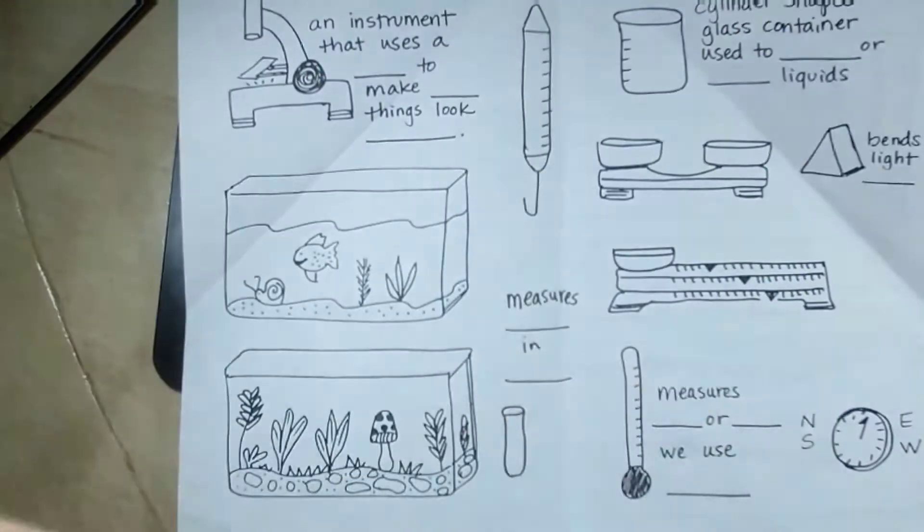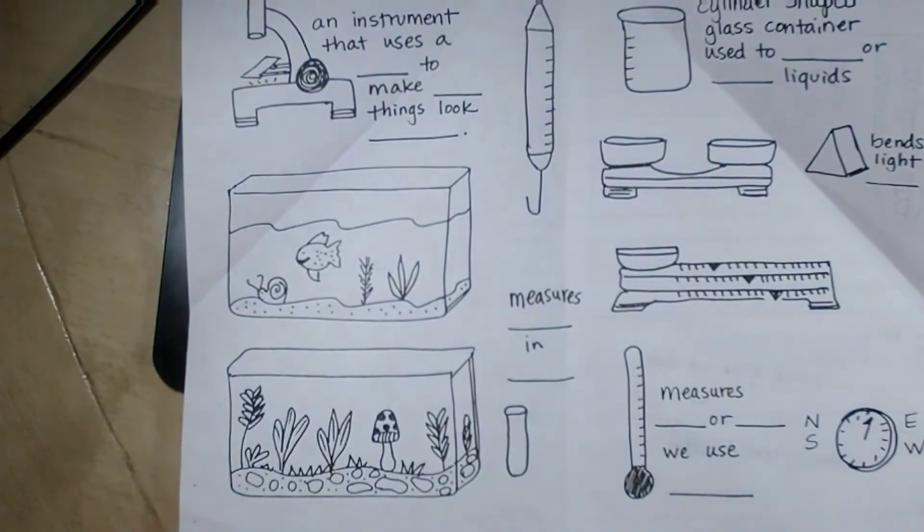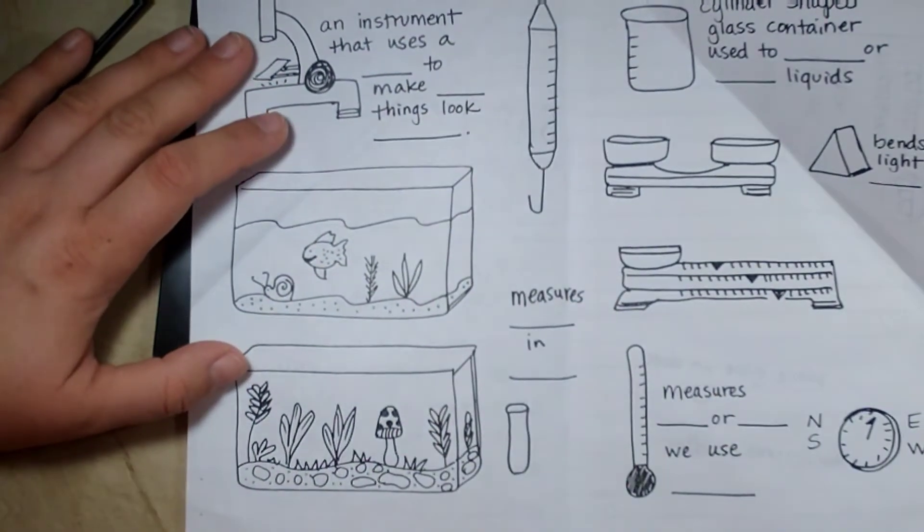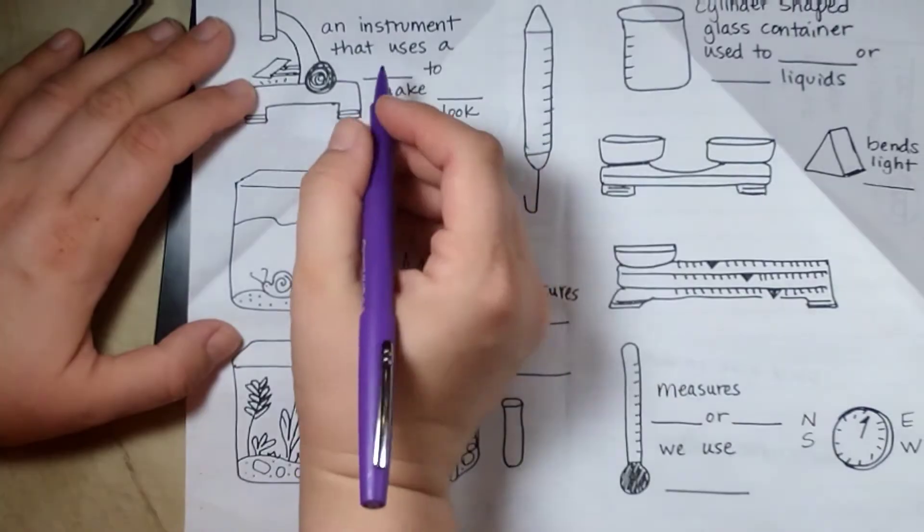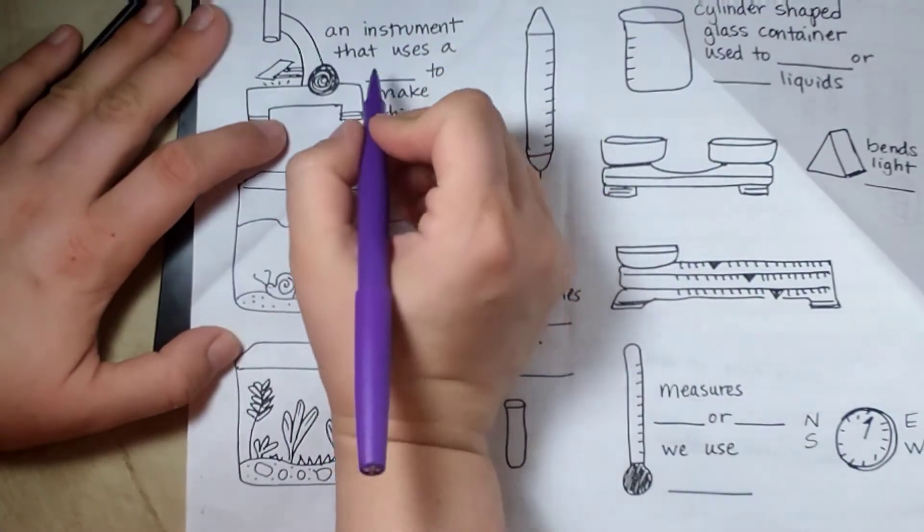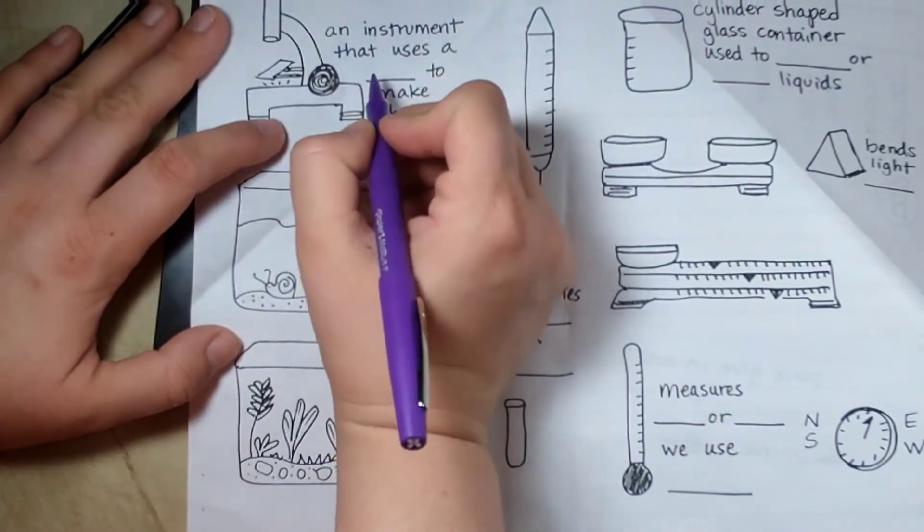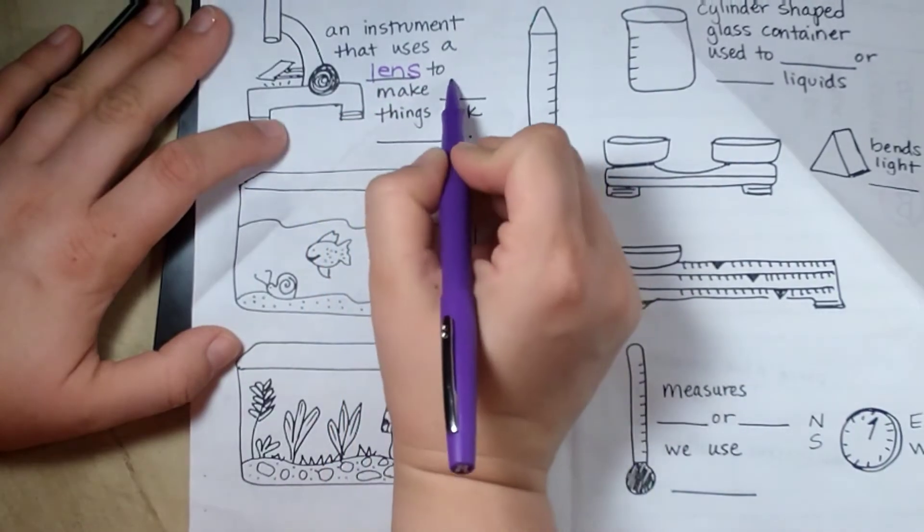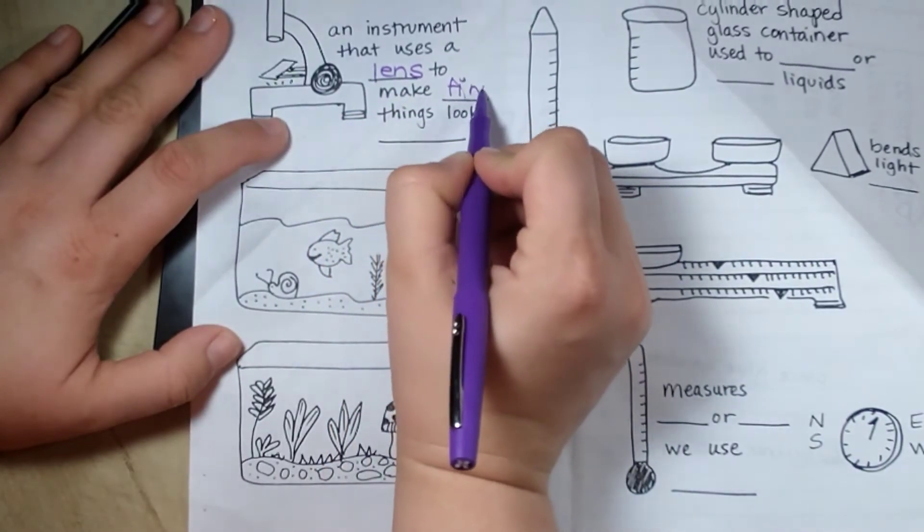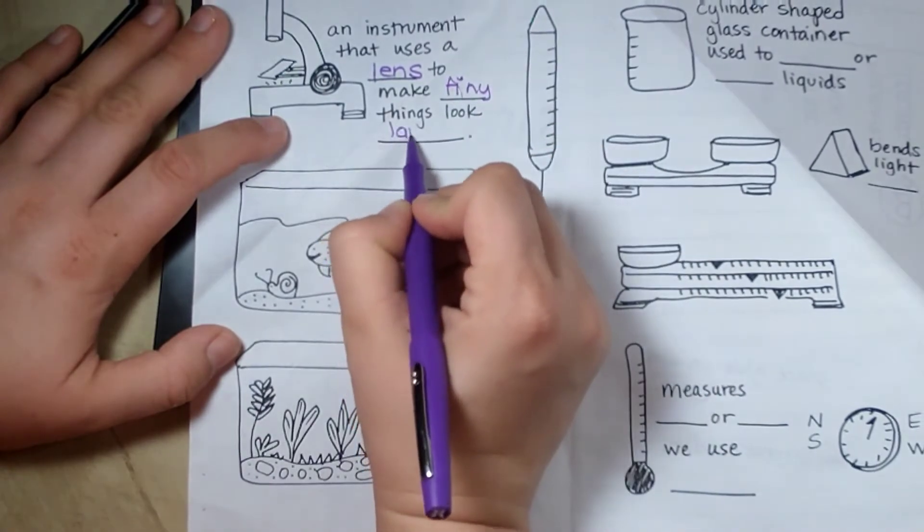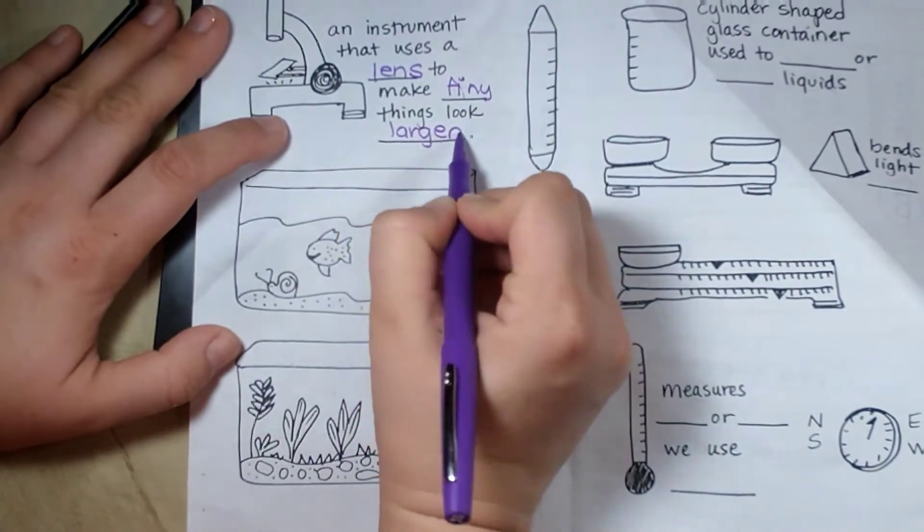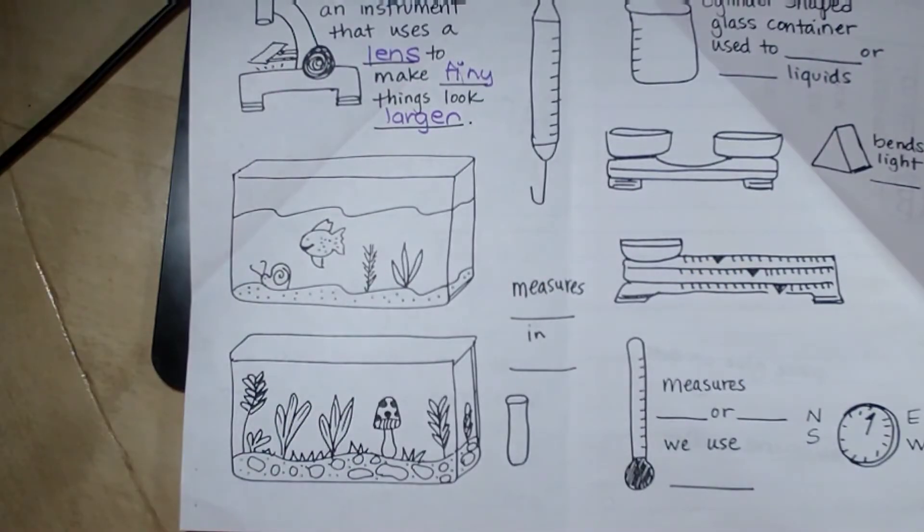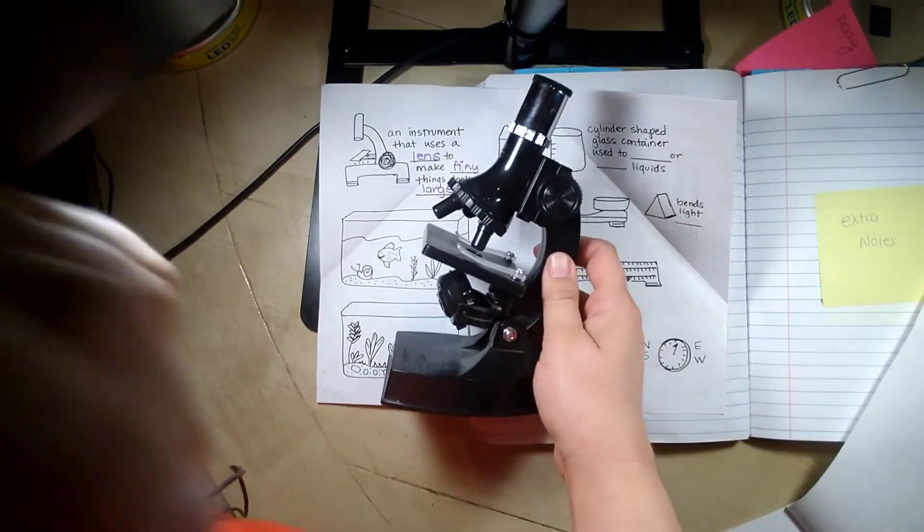Alright, so the next thing is a microscope. A microscope is an instrument that uses a lens to make tiny things look larger.